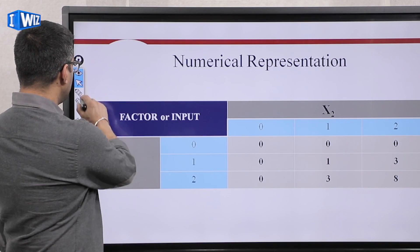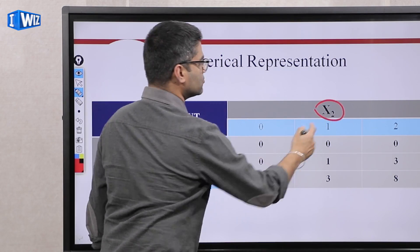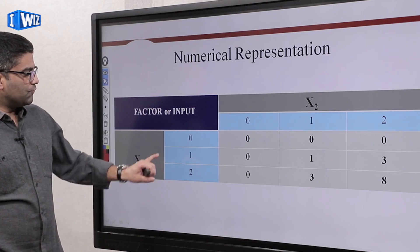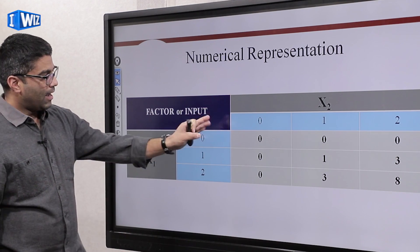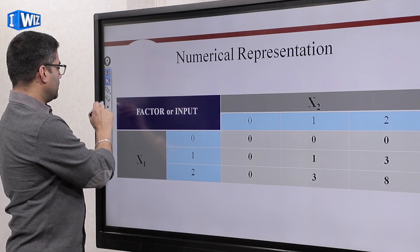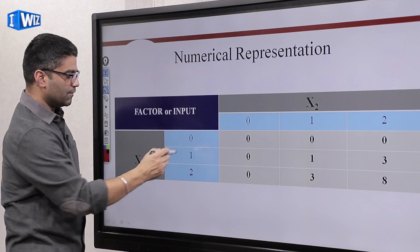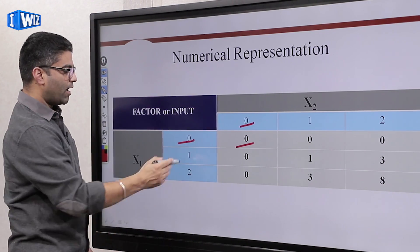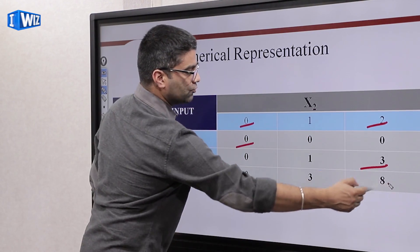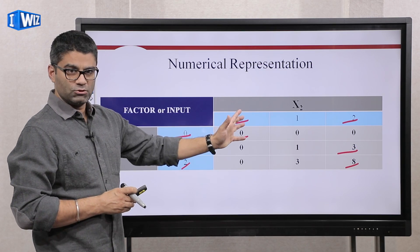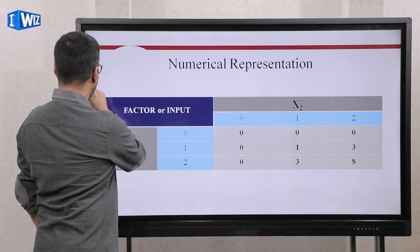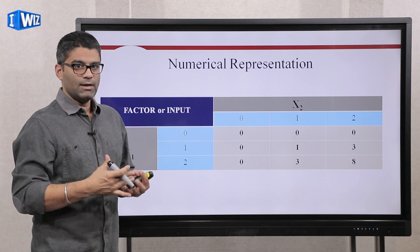Here's a numerical example. You have two inputs: input one — think of it as labor — and input two, let's say raw materials. It can also be skilled and unskilled labor, or any combination of two inputs. This column corresponds to how many units of x1 you're hiring, and this row corresponds to how many x2 you're hiring. This grid represents total output produced for a given combination of x1 and x2. If you hire zero of both, you produce zero. If you hire one unit of x1 and two units of x2, you produce three. As you hire more inputs, you produce more output.